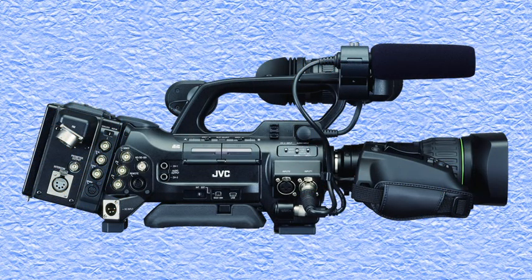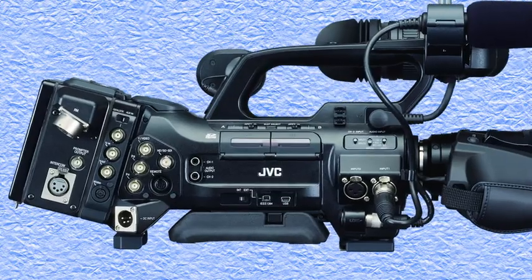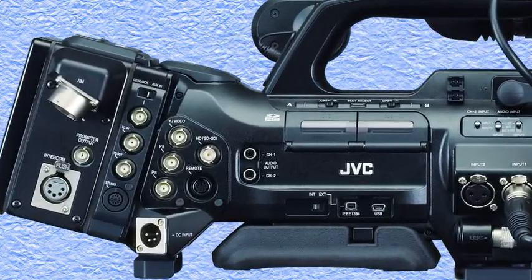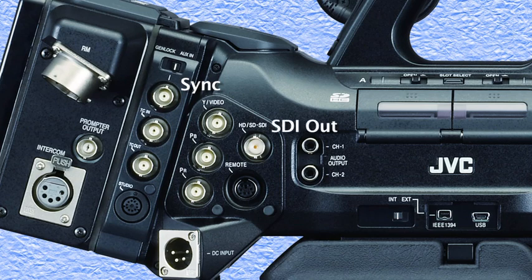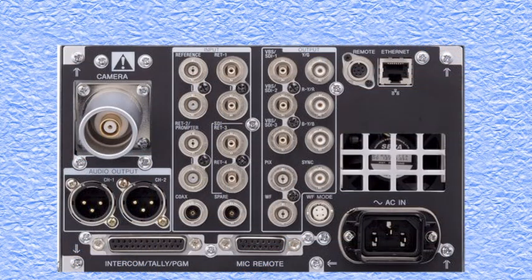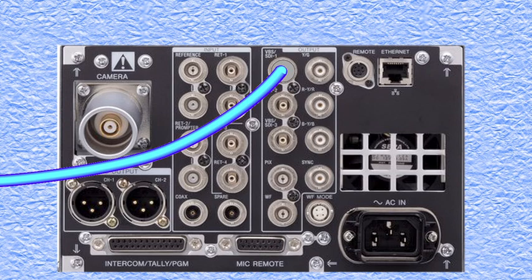When smaller portable cameras are used for studio work, separate cables have to be run out to them, such as the sync cable, video out cable, teleprompter, power, and so on. For this tutorial, we are assuming the studio has a dedicated studio camera with a CCU, and that is where the video output that feeds the rest of the system will come from.